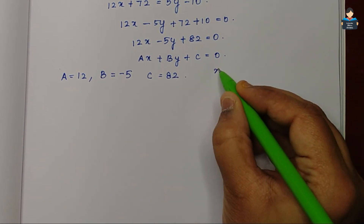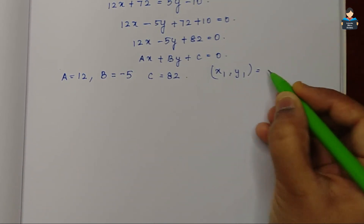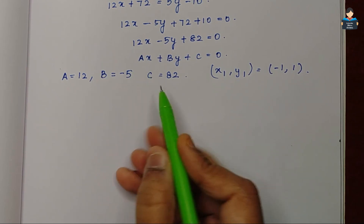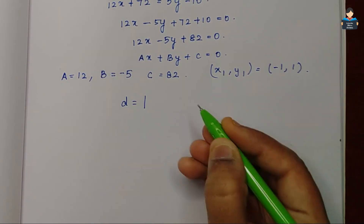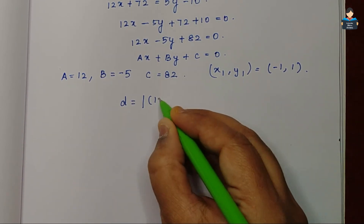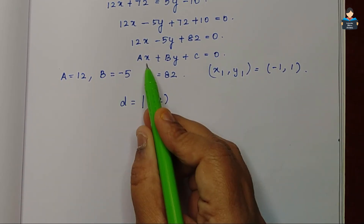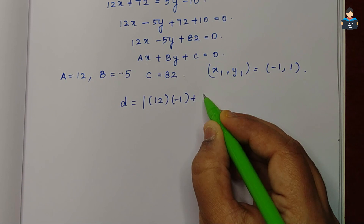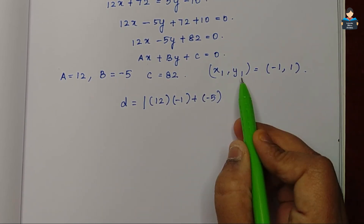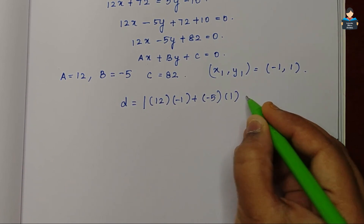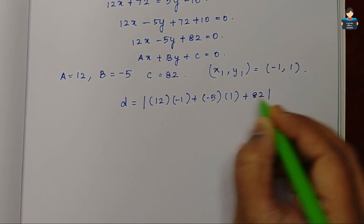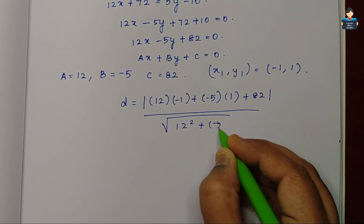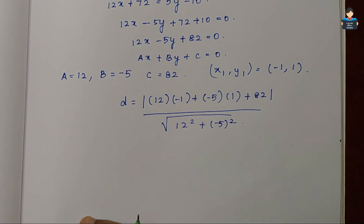இப்போ, இதுல substitute பண்ணோம். x1, y1 — வந்த, வங்க கொடுத்த புக்க point-ரோட coordinates minus 1, 1. இப்போ, வந்த நம்ம distance formula-ல substitute பண்ண போறோம். So, d is equal to modulus of a வந்து 12 into x1 minus 1, plus b value வந்து minus 5 into y1 வந்து 1, plus c 82, by square root of 12 square plus minus 5, the whole square — வந்து number solve பண்ணோம்.